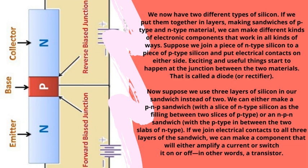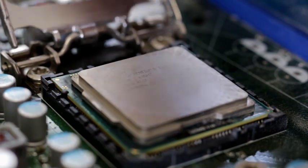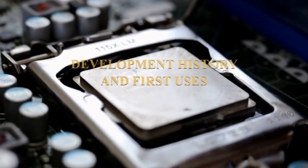If we use three layers of silicon in our sandwich instead of two, we can make either a PNP sandwich — with a slice of N-type silicon as the filling between two slices of P-type — or an NPN sandwich, with P-type in between two slabs of N-type. If we join electrical contacts to all three layers, we can make a component that will either amplify a current or switch it on or off. In other words, a transistor.